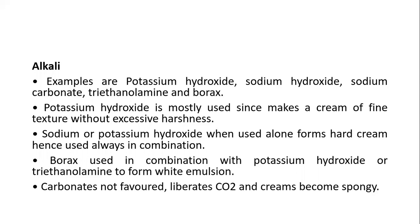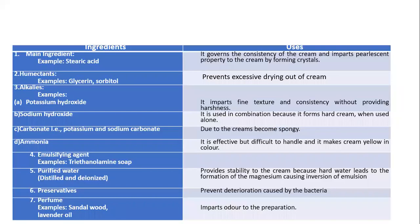Carbonate is not favoured as it liberates carbon dioxide and causes the cream to become spongy. Emulsifying agents are also used. Purified water is important since hard water leads to the formation of magnesium salts, causing inversion of the emulsion. Preservatives prevent deterioration caused by bacteria. Perfume imparts fragrance to the preparation.